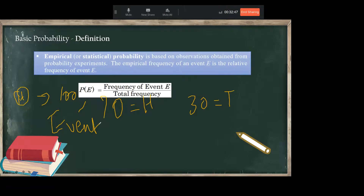The probability of an event E is the frequency of that event divided by total frequency — that's it, which means this is a relative frequency. In economics and finance we mostly consider this probability as a function, and we mostly use this empirical probability, though we also use classical and subjective as well.